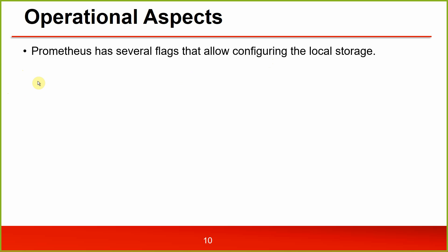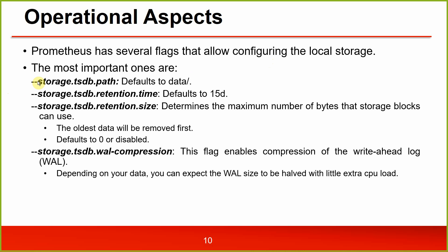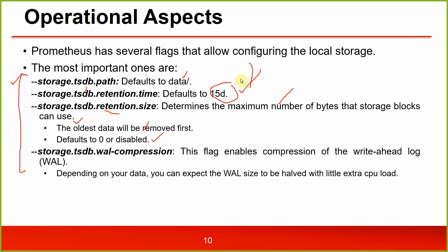Operational aspects: Prometheus has several flags that allow configuration of local storage. The most important ones are: storage.tsdb.path (defaults to /data), storage.tsdb.retention.time (default is 15 days — you can change this), and storage.tsdb.retention.size which determines the maximum number of bytes the storage blocks can use. The oldest data will be removed first; the default is 0, which is disabled.